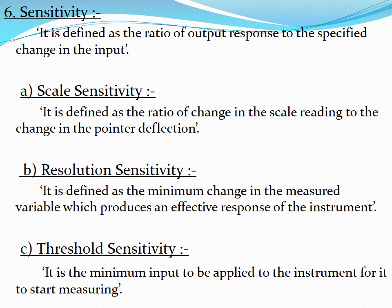The next topic is sensitivity. Sensitivity is defined as the ratio of output response to a specified change in the input. There are three types of sensitivity: first is scale sensitivity, second is resolution sensitivity, and third is threshold sensitivity. Scale sensitivity is defined as the ratio of change in the scale reading to the change in the point of deflection. If the scale sensitivity is large, the overall accuracy of the instrument is less.